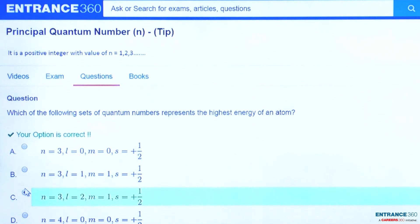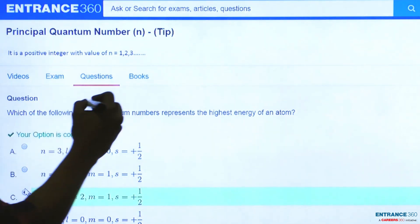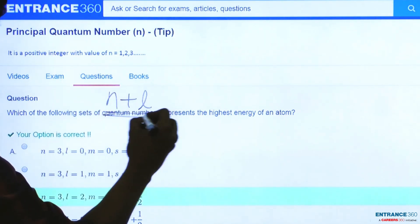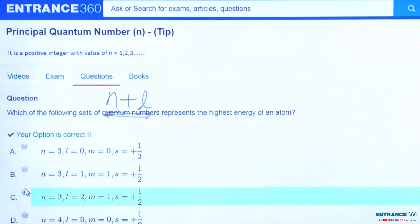Similarly, we can use an alternate method to solve this question. For the calculation of energy, we can simply use the sum of n plus l, and we will check which will have the highest sum of n plus l, and that will have the highest amount of energy.